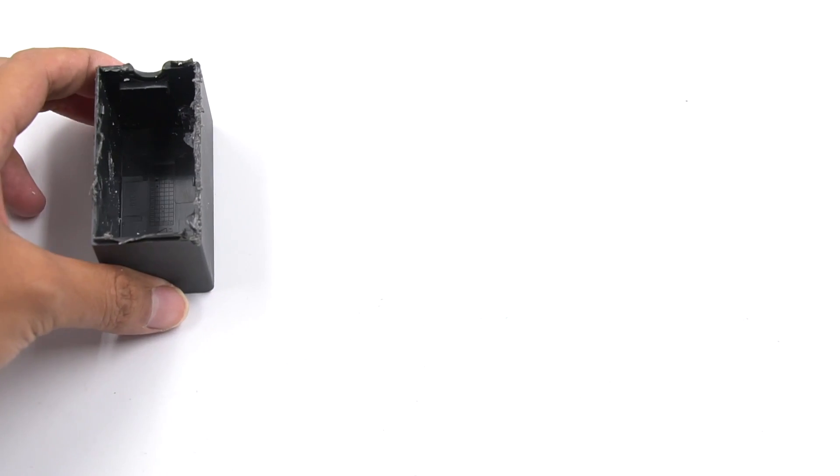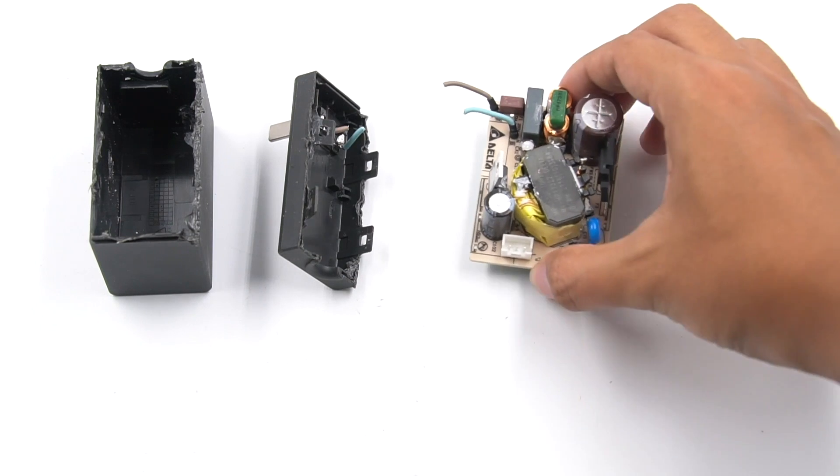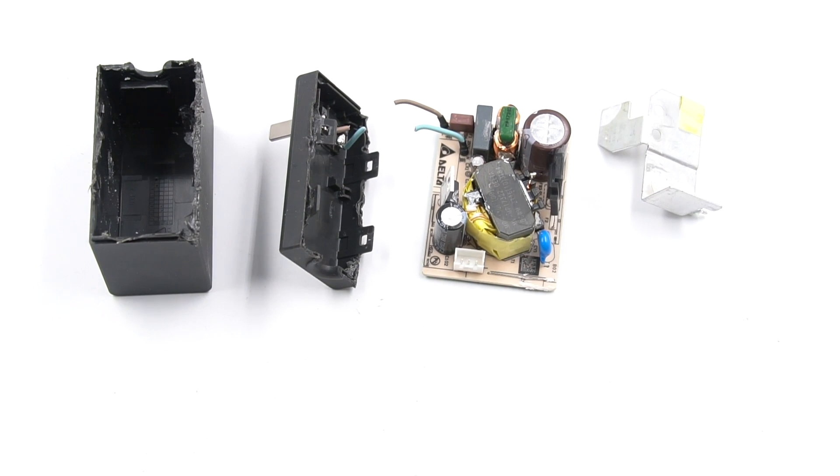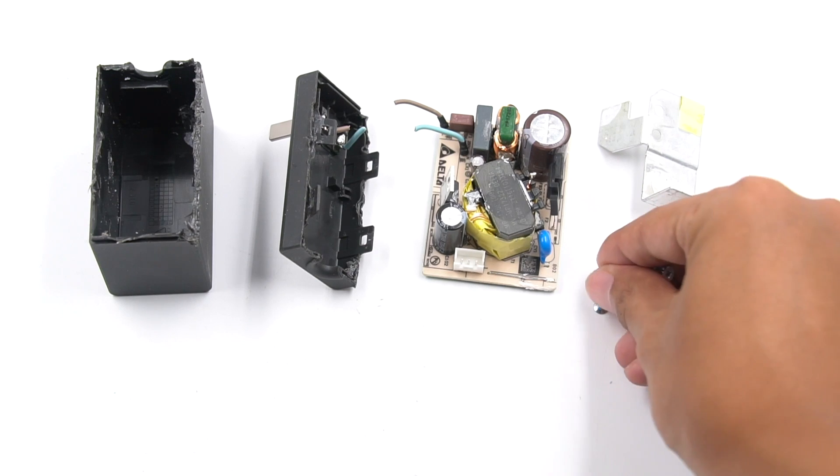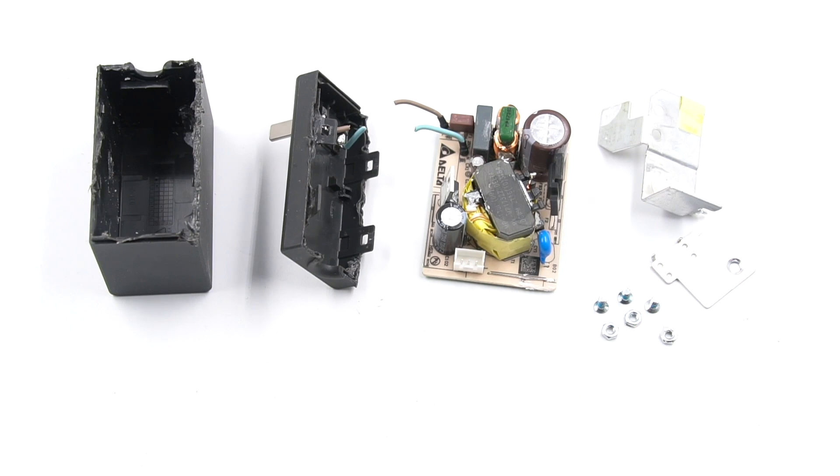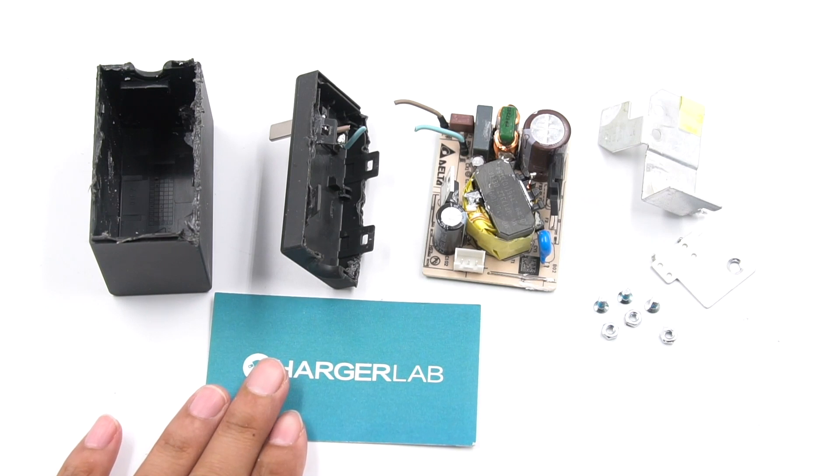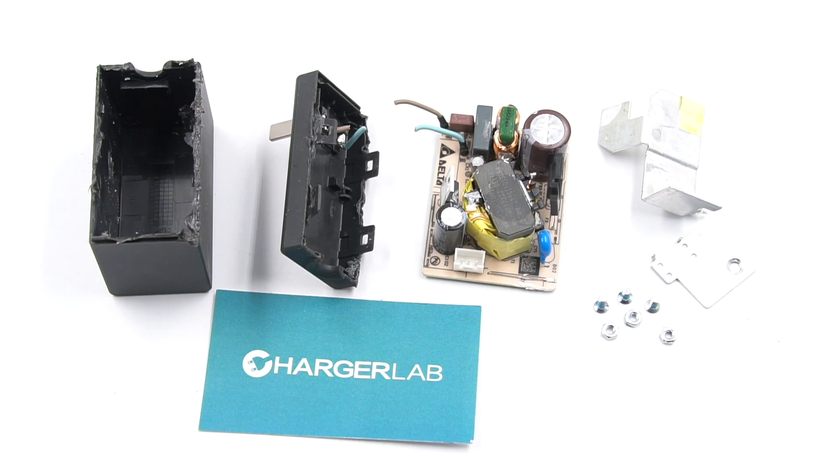Okay, that will be all for today's teardown of Nintendo Switch 39W AC adapter, which is manufactured by Delta. The PWM controller and protocol chip come from Delta. The capacitors are all Japanese. The overall quality belongs to the level of a first-class manufacturer. If you like this charger or need to buy one, you can go to Best Buy to take a look. If this video helps you, please drop a like and leave any comments. If you wanna see more content like this, please subscribe to us and visit our website at chargerlab.com. See you next time.